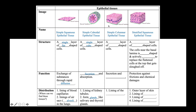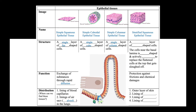Simple columnar epithelial tissue is made up of a single layer of column-shaped cells. Like simple cuboidal epithelial tissue, it is also responsible for secretion and absorption, and can be commonly found lining the digestive tract. In the intestinal villus, each columnar epithelial cell possesses finger-like projections called microvilli to increase the surface area for nutrient absorption.